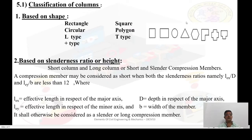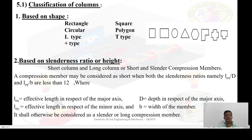We will now discuss the classification of columns. First, based on shape: as per our requirement, the column can be rectangular, circular, L-type, plus-type, square, polygon, or T-type.